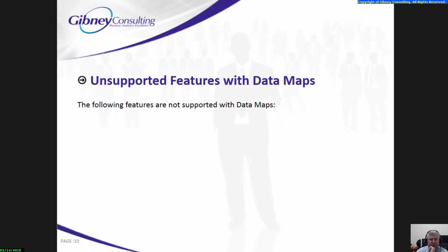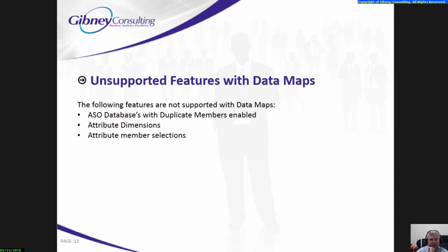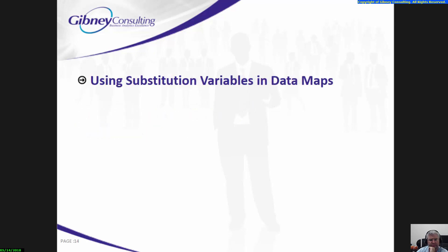Unsupported features with data maps — the following features are not supported: ASO databases with duplicate members enabled, attribute dimensions, attribute member selections, and using substitution variables in data maps.